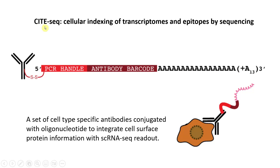CITE-seq is the abbreviation of Cellular Indexing of Transcriptomes and Epitopes by Sequencing. This is a modified single-cell RNA sequencing method. In this method, single-cell suspension was first incubated with a set of cell type-specific antibodies conjugated with oligonucleotides to integrate cell surface protein information with single-cell RNA sequencing readout.